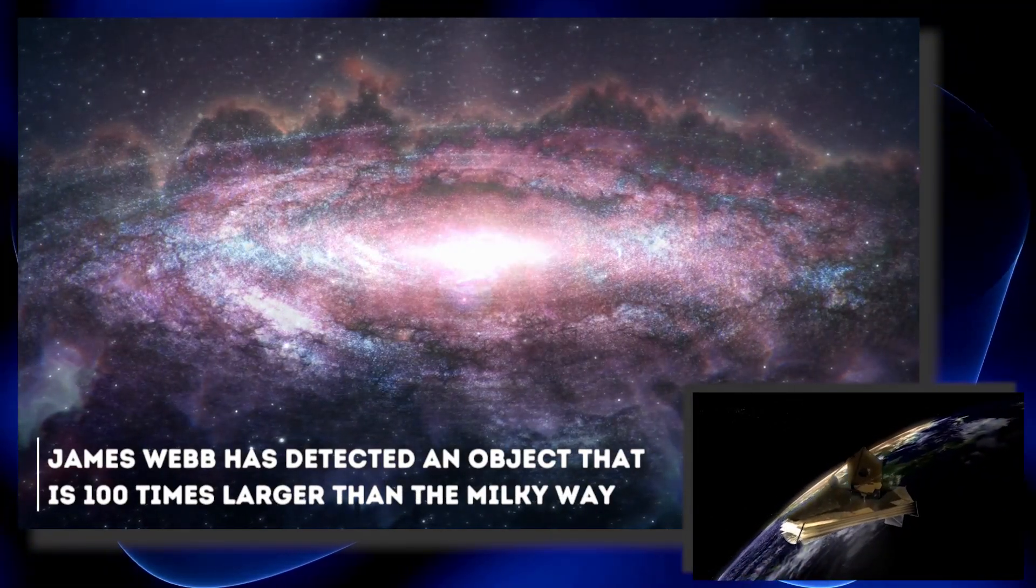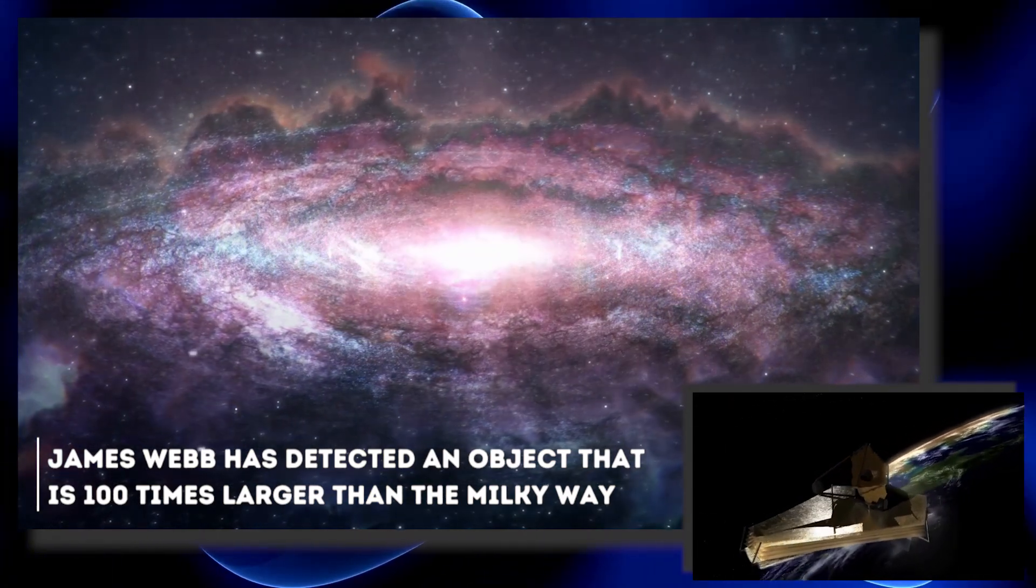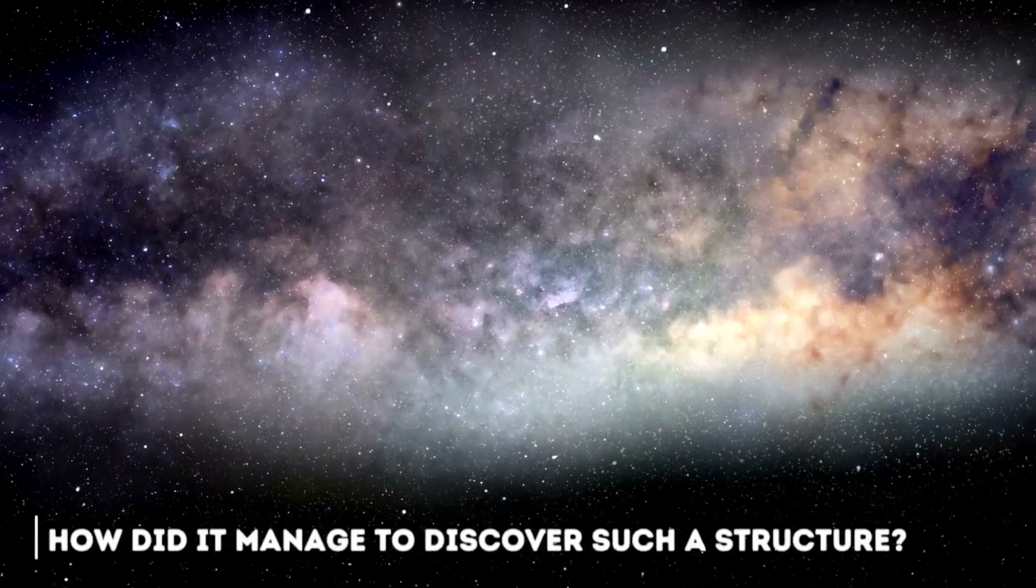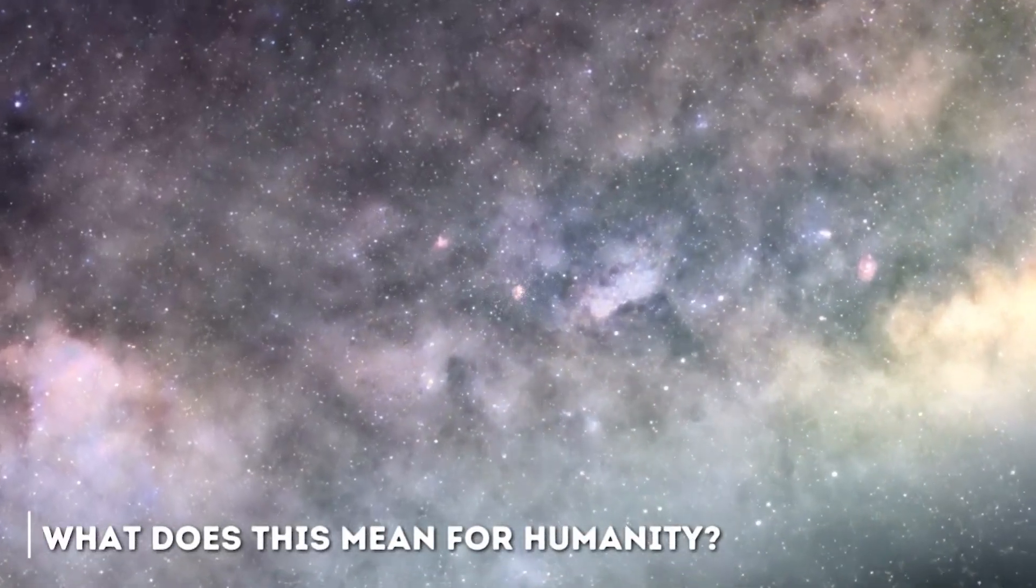Recently the James Webb has detected an object that is 100 times larger than the Milky Way. How did it manage to discover such a structure? And what does this mean for humanity?